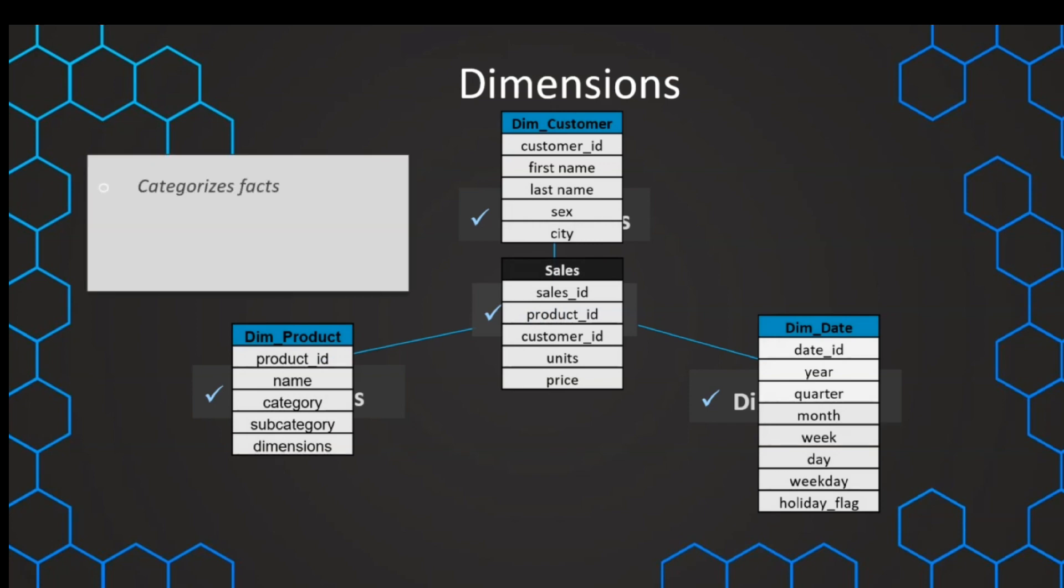The purpose of dimensions is to categorize the facts so we get meaningful context for our measurements. Otherwise, if we just have the total amount of units sold, we don't have meaningful insights.